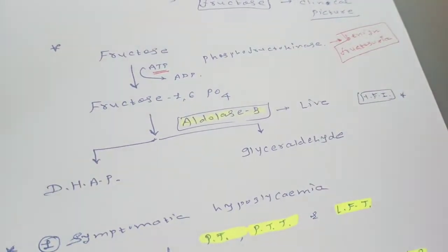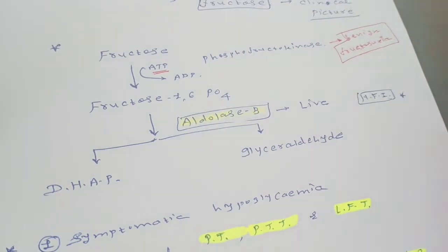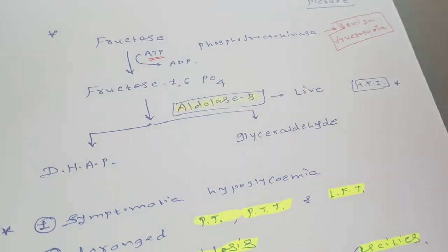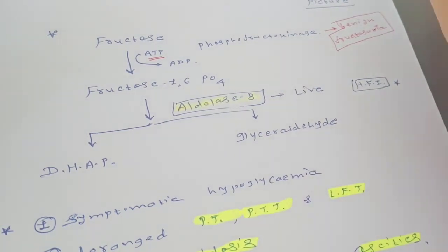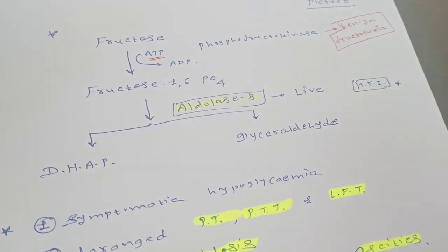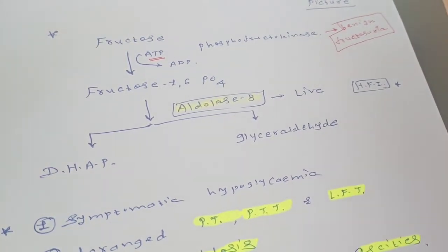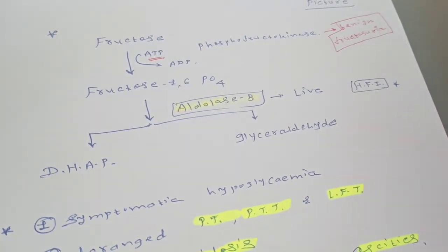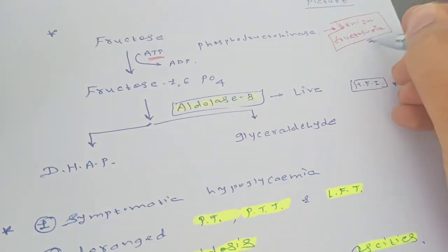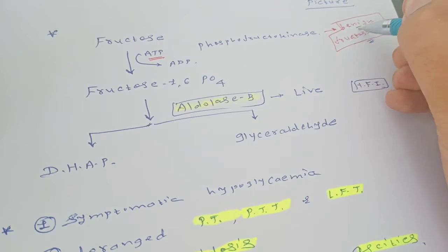In fructose metabolism, there are lots of MCQs which I couldn't understand initially, frankly speaking. After reading so much, I came to a very small conclusion, and after that I assure you, you all will get the conceptual points of fructose metabolism. In fructose metabolism, there are basically two types: one is benign fructosuria and one is hereditary fructose intolerance. In both of these types, there is a deficiency of enzymes which affects the fructose metabolism.